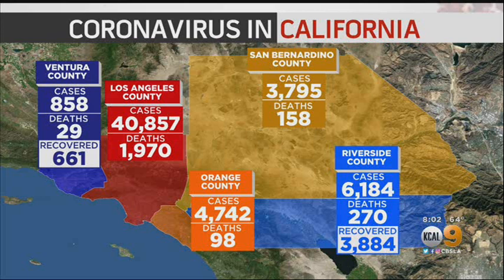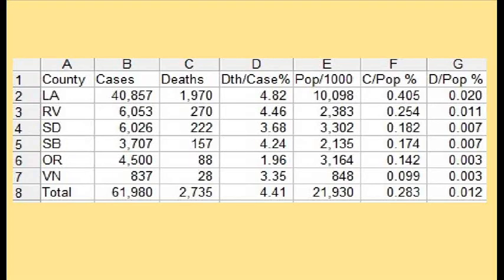Here we have five counties — I thought I'd add in San Diego. So I loaded in the number of cases by the six counties: L.A., Riverside, San Diego, San Bernardino, Orange, and Ventura, and also the number of deaths and the rate of death per each case, which ranged from about 2 to about 5% fatality rate, and did a grand total average of the six counties. I also looked up the population for each county — it's in thousands here — and calculated the cases per population and the death per population.